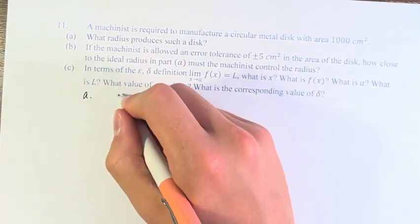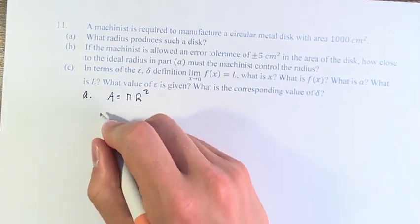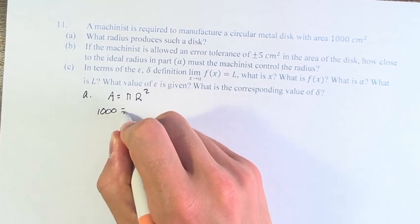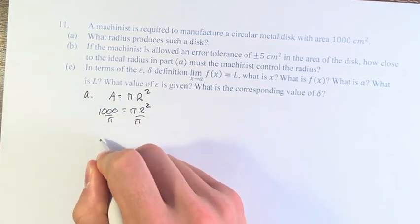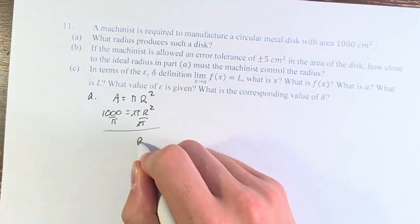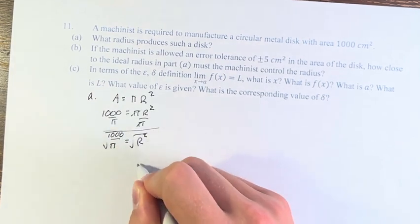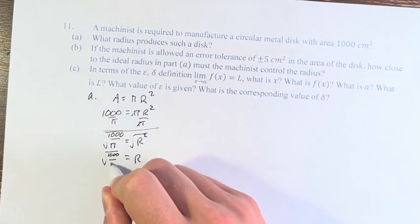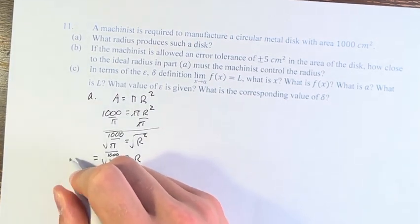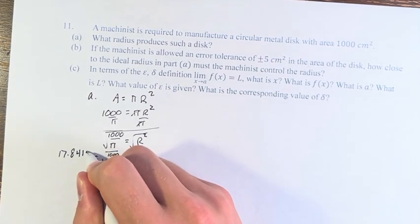So, the area of a circle is equal to pi times the radius squared. If we have 1,000, we can solve for the radius. So, r squared is equal to 1,000 divided by pi. Taking the square root of it, r is equal to the square root of 1,000 over pi, which is 17.8412, roughly.